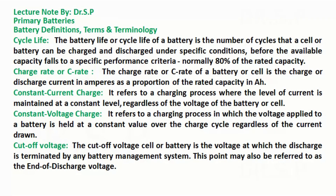Cycle life: the battery life or cycle life of a battery is the number of cycles that a cell or battery can be charged and discharged under specific conditions before the available capacity falls to a specific performance criteria, normally 80 percent of the rated capacity. Charge rate or C-rate: the charge rate or C-rate of a battery or cell is the charge or discharge current in amperes as a proportion of the rated capacity in amperes.